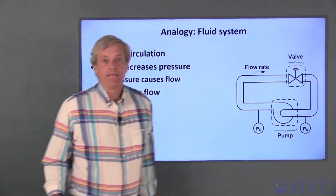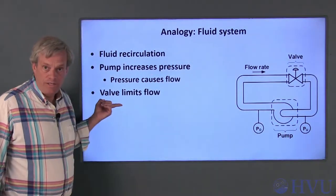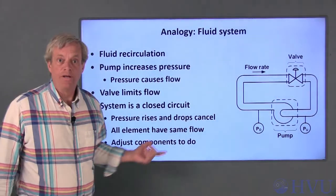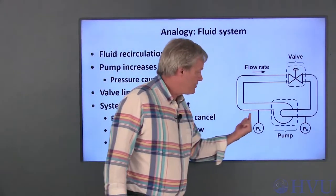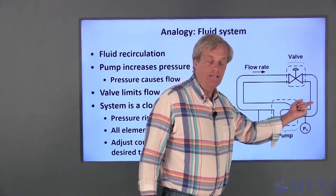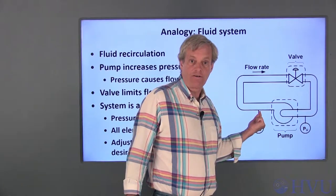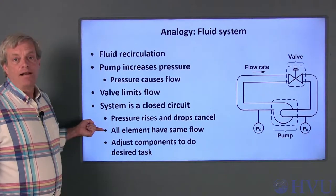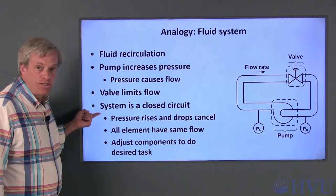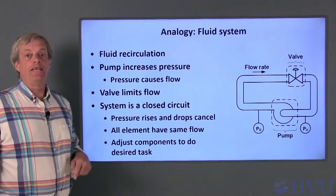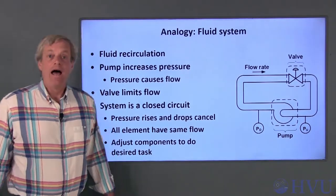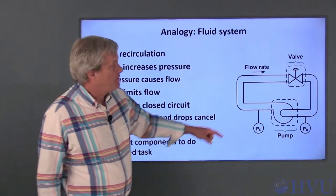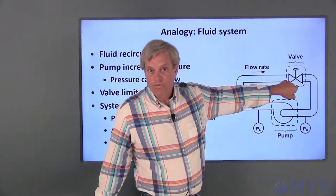The valve in this system dissipates energy — it converts flow rate to a decrease in pressure. Notice that this system forms a closed loop. If I follow the loop, any pressure differences in the system cancel out and I end up with the same pressure I started with. Also, the flow rate into any component has to be balanced by the flow leaving that component. These conditions on pressure and flow rate govern the interactions between the components in the system. I can adjust the behavior of the system by changing the components — for example, opening or closing the valve changes the flow rate in the system.